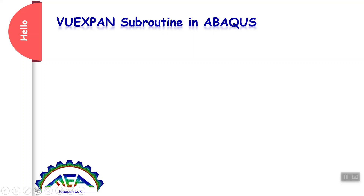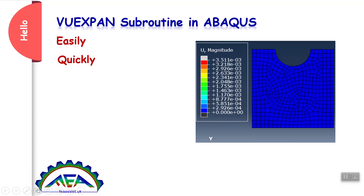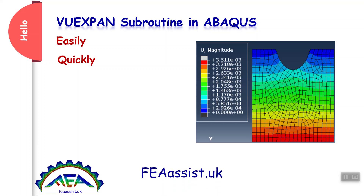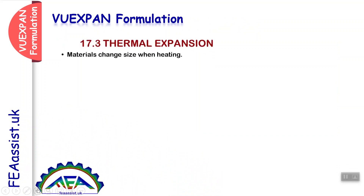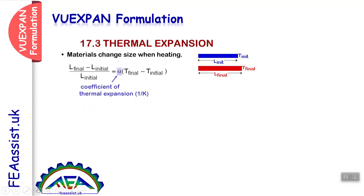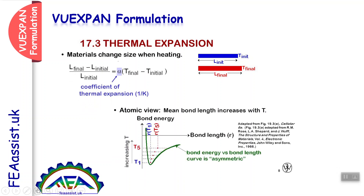Hello, you want to learn VUExpand subroutine in Abacus easily and quickly. VUExpand is a subroutine to define thermal expansion in Abacus. Materials change size when heating — if you increase the temperature of a sample, the length of the sample in all directions will increase. How much depends on the thermal expansion coefficient. At the atomic level, the interatomic distance increases with heating, and this is the reason for thermal expansion.